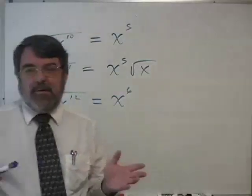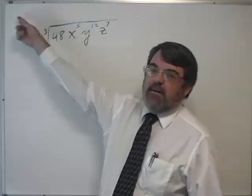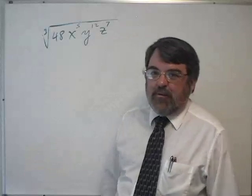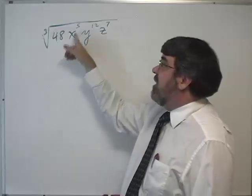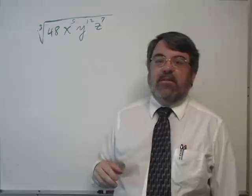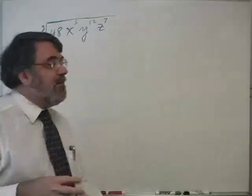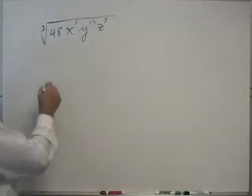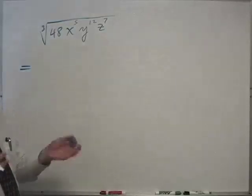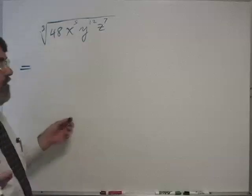Let me give you a bigger problem to look at. Here's a cube root problem. Simplify the cube root of 48 x to the fifth power y to the twelfth power and z to the seventh power. We have two kinds of objects: a number, 48, and variables raised to integer powers. Looking at the cube root of 48, I want to break it up, factor it into a perfect cube and another integer. Eight is the largest perfect cube that will divide out of 48: 8 times 6.